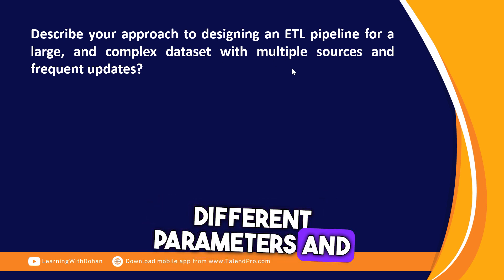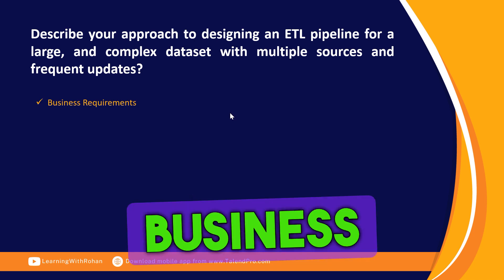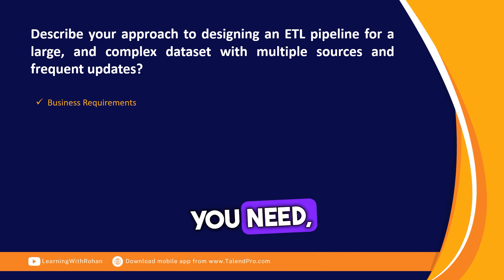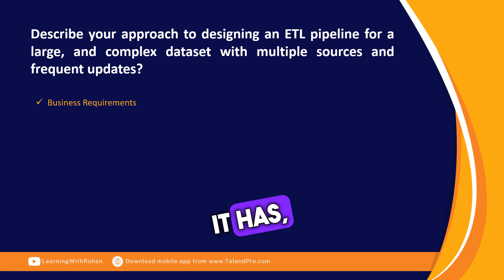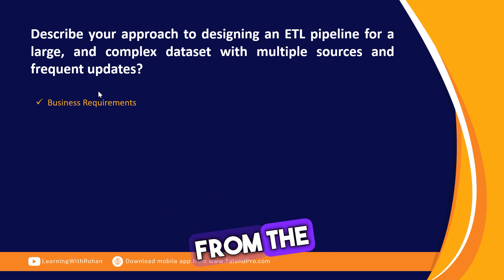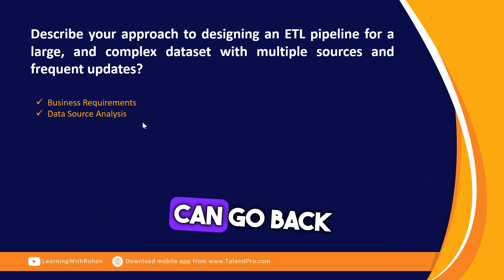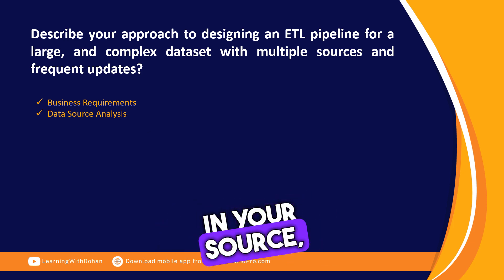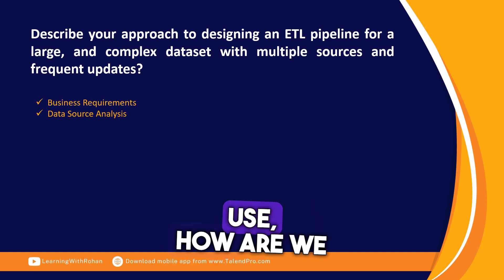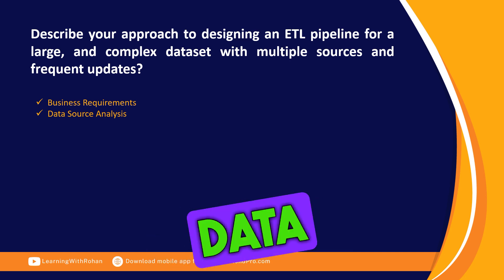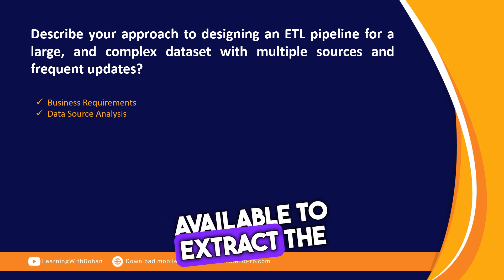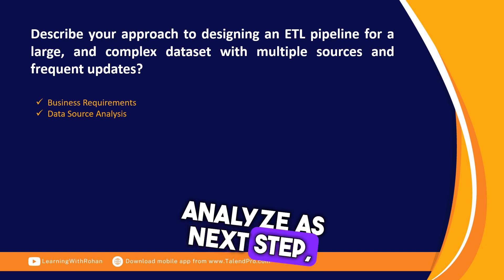Before answering, you should understand all the different parameters. You can start by saying you'll first analyze the business requirements — whether to bring in all the data or only a portion of historical data, what type of data it is, the subject area, and the volume. Then you go back and check the data in your source: look at your tables, database technology used, how you are extracting the data, how you connect, and what options are available for extraction.